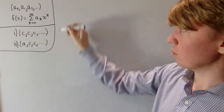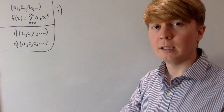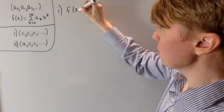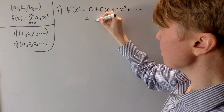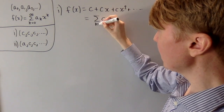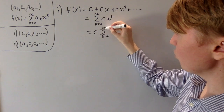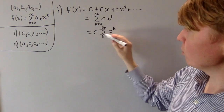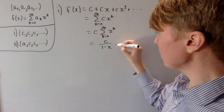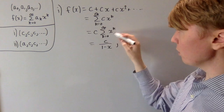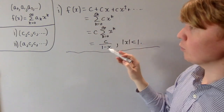For our first example, we have a sequence which is constant — every term is the same, all equal to c for some real or complex number c. So f(x) is just c + cx + cx² + ... We write this as the sum of cx^k from k = 0 to infinity. Taking out the factor of c gives a geometric series in x^k, and we know this sum equals 1/(1−x). So the generating function is c/(1−x), valid when |x| < 1.